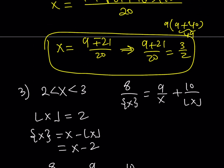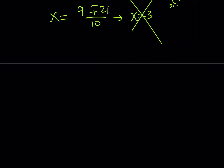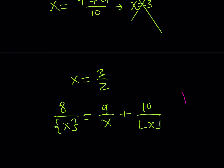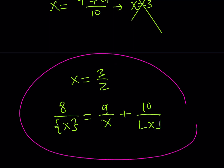The only solution is x equals 3/2. Our original equation was 8 divided by the fractional part of x equals 9 over x plus 10 over the floor value of x, and this brings us to the end of the video. Thank you for watching. Please comment, like, and subscribe, and don't forget to check out the merch. I'll see you tomorrow with another video. Be safe and take care. Bye-bye.